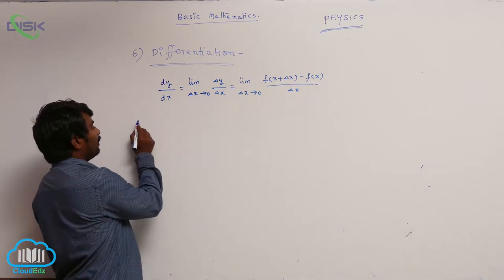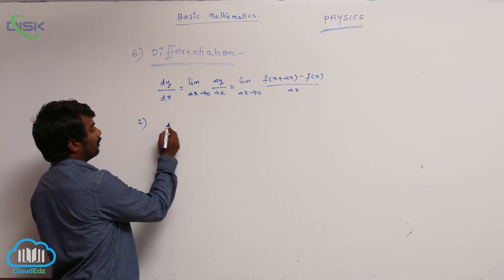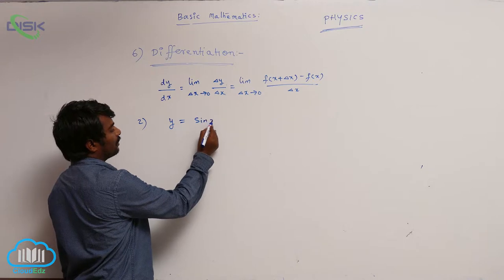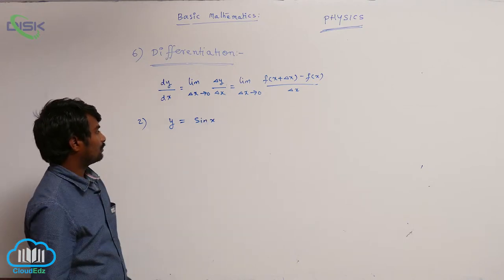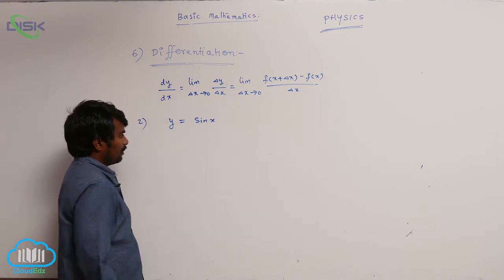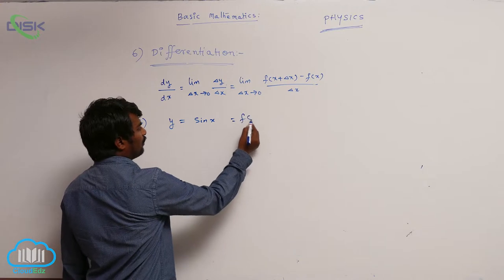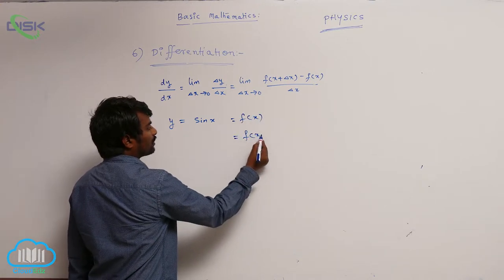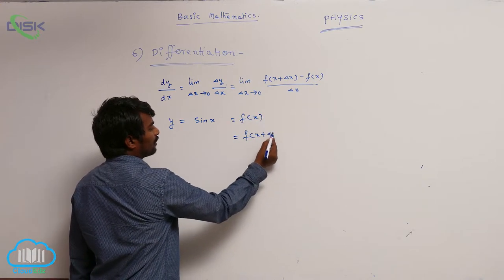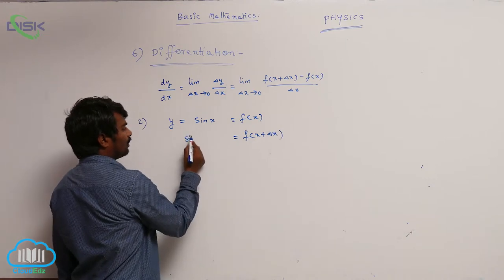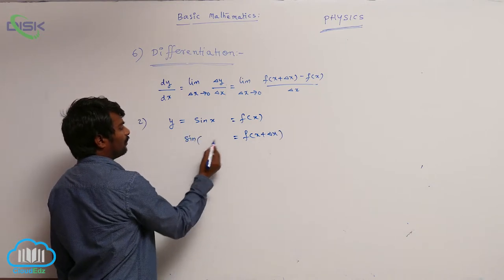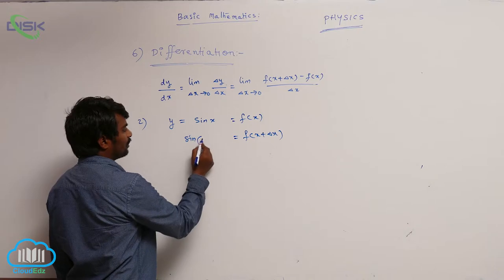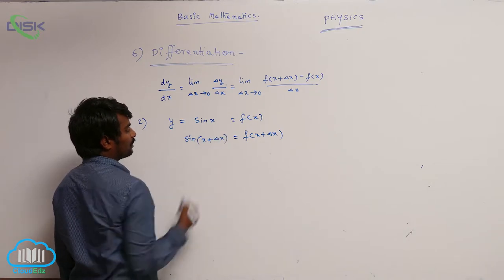Let us see one more example: y is equal to sin x. Let me take one trigonometric function. This is f of x. f of x plus delta x is equal to sin — wherever x is present, you substitute x plus delta x, say x plus delta x.